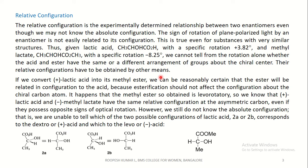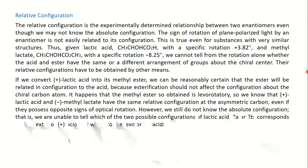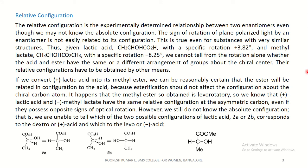Coming to relative configuration. The relative configuration is the experimentally determined relationship between two enantiomers. Even though we may not know the absolute configuration, the sign of rotation of plane-polarized light by an enantiomer — either dextro or levo — is not easily related to its configuration. This is true even for substances with very similar structures.